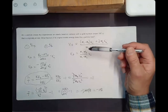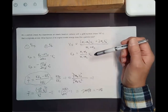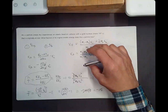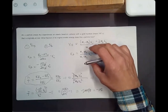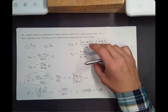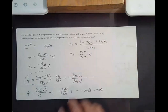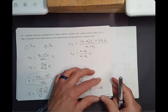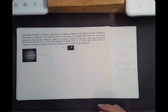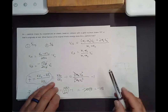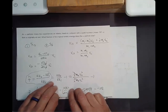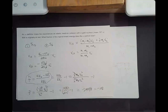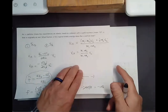Rutherford worked through the math and figured out what the charge distribution had to be, realizing there was a tiny, dense center at the heart of the atom containing all the positive charge and 99.9% of its mass — the discovery of the nucleus. Rutherford later got a Nobel Prize in Chemistry for that discovery, and he said the most amazing transformation in his life was changing from a physicist to a chemist when he received it. He still thought of himself as a physicist.